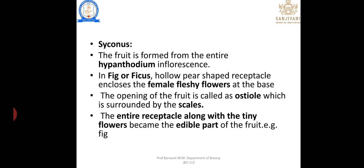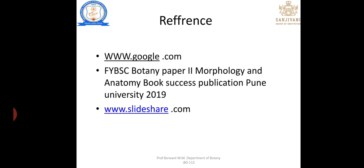Syconus — the fruit is formed from the entire hypanthodium inflorescence, as in fig (Ficus). The female fleshy flowers are at the base; the opening of the fruit is known as the ostiole; the entire receptacle along with the tiny flowers becomes the edible part of the fruit. Example — fig.